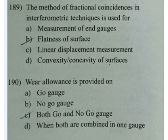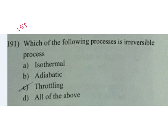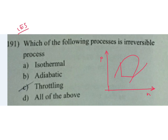Where is allowance provided — on A go gauge, B no-go gauge? Official answer is A — go gauge. This is also an IES question. Which of the following processes is an irreversible process? For a household refrigeration cycle on a P-H chart, the throttling process (process 3 to 4) is an irreversible process.